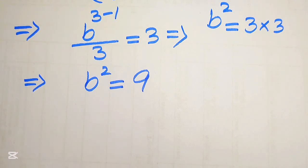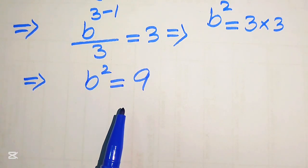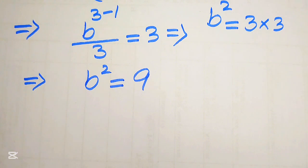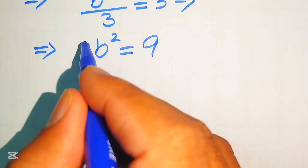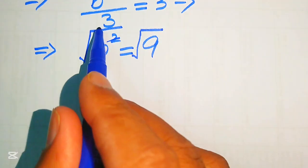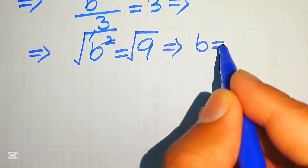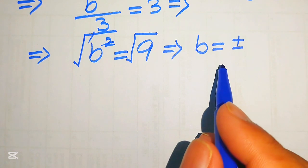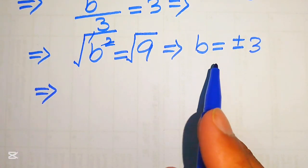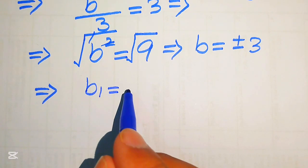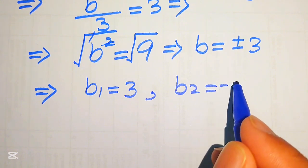This is a pure quadratic equation in b. The first method is to take the square root directly on both sides. The second method is to apply the algebraic identity a squared minus b squared equals (a minus b)(a plus b). Here I will take the square root on both sides. Taking the square root cancels the exponent 2, and applying the plus-minus sign, since the square root of 9 is 3, we get b equals plus or minus 3.